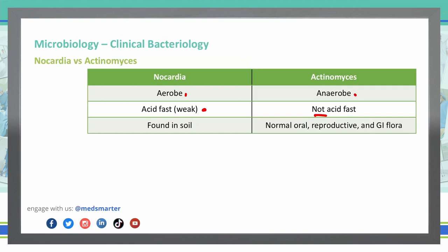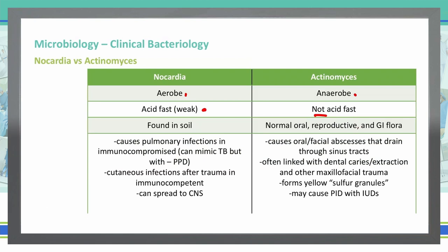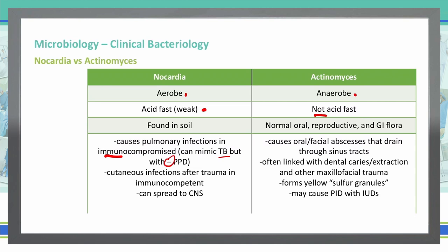Nocardia causes pulmonary infections, most specifically in patients who are immunocompromised. It can mimic certain things like TB, but if you do a PPD — the purified protein derivative — that PPD test will be negative. It can also be seen in cutaneous infections after immunocompetent patients undergo some sort of trauma that breaks the skin, inoculating it with Nocardia. Finally, Nocardia can spread to the CNS, so be aware of that when looking for symptoms related to Nocardia.